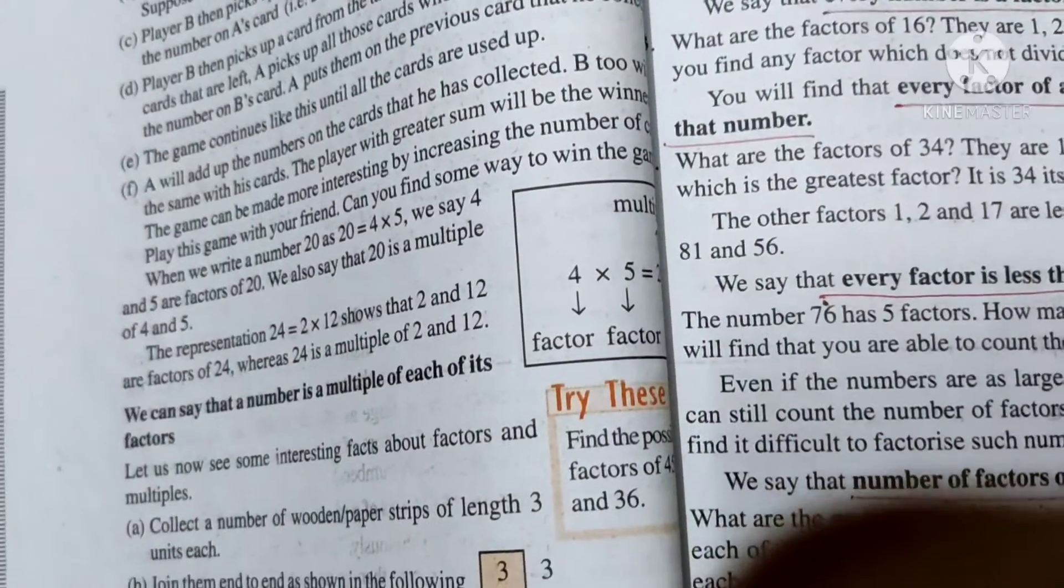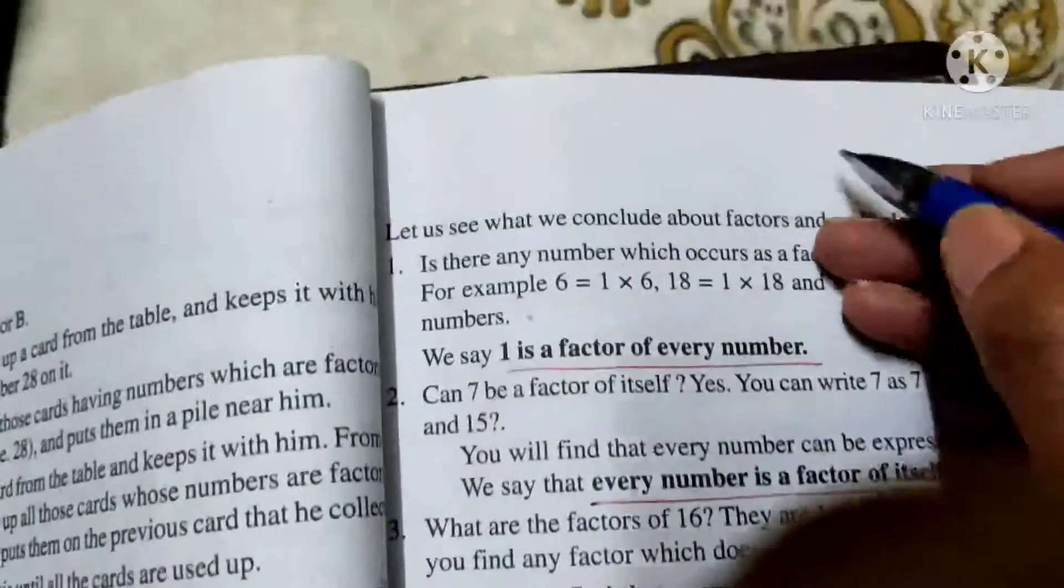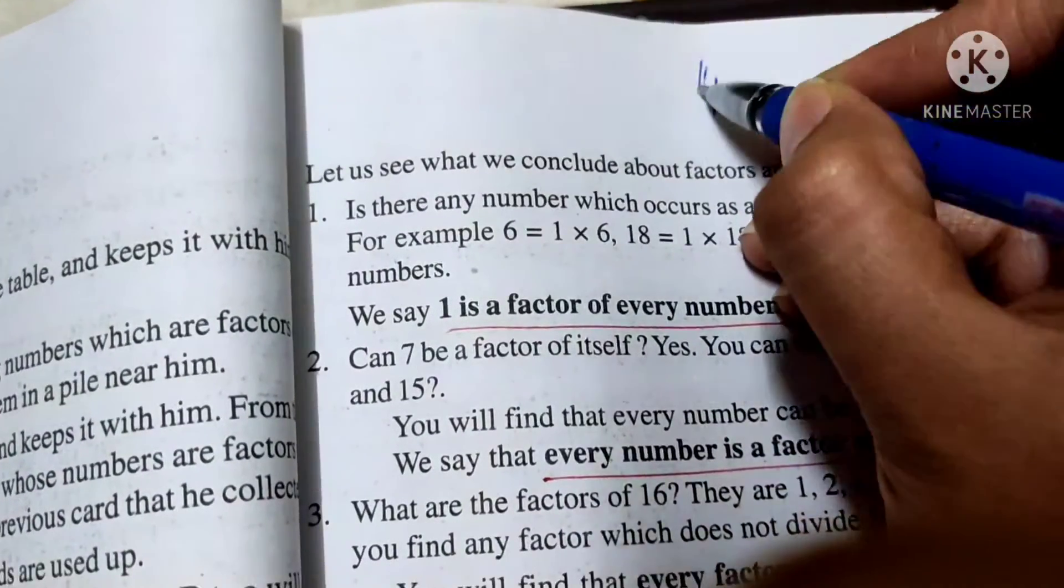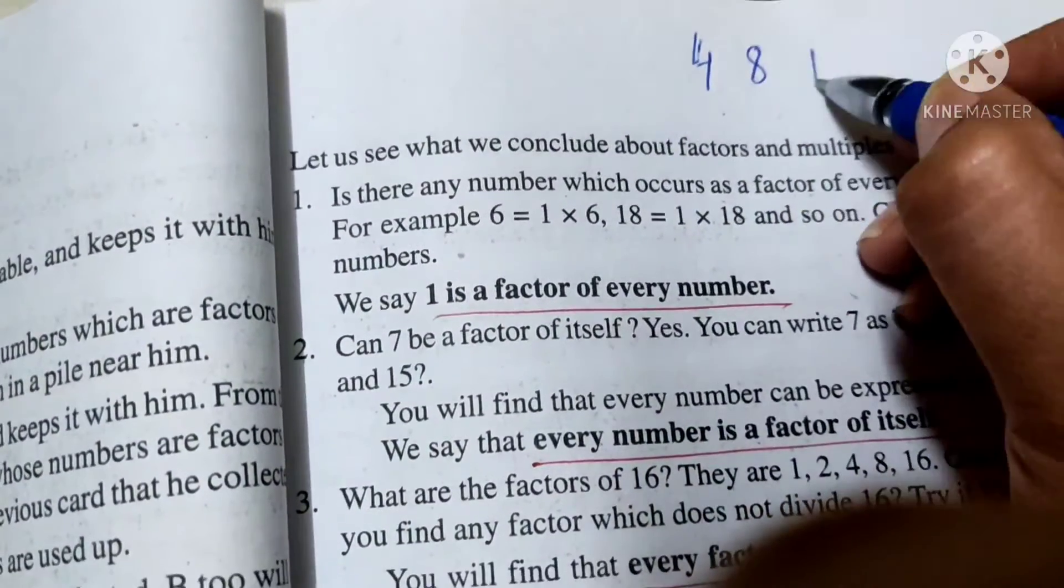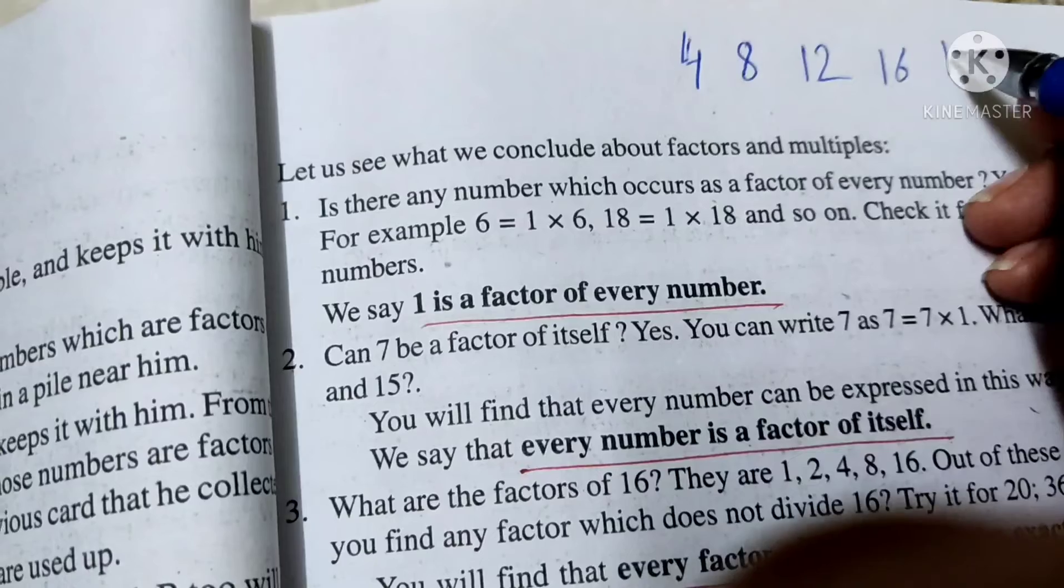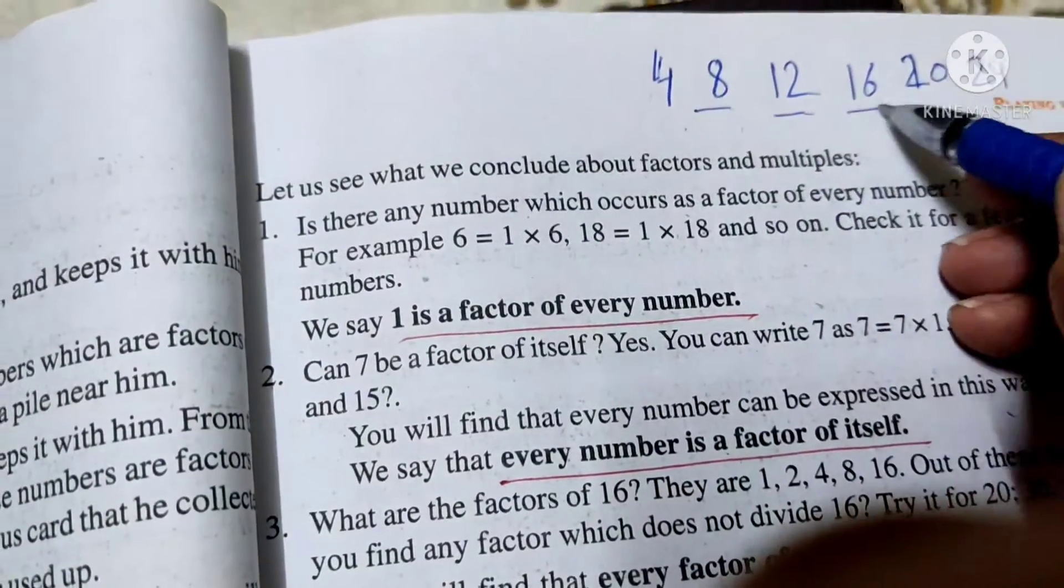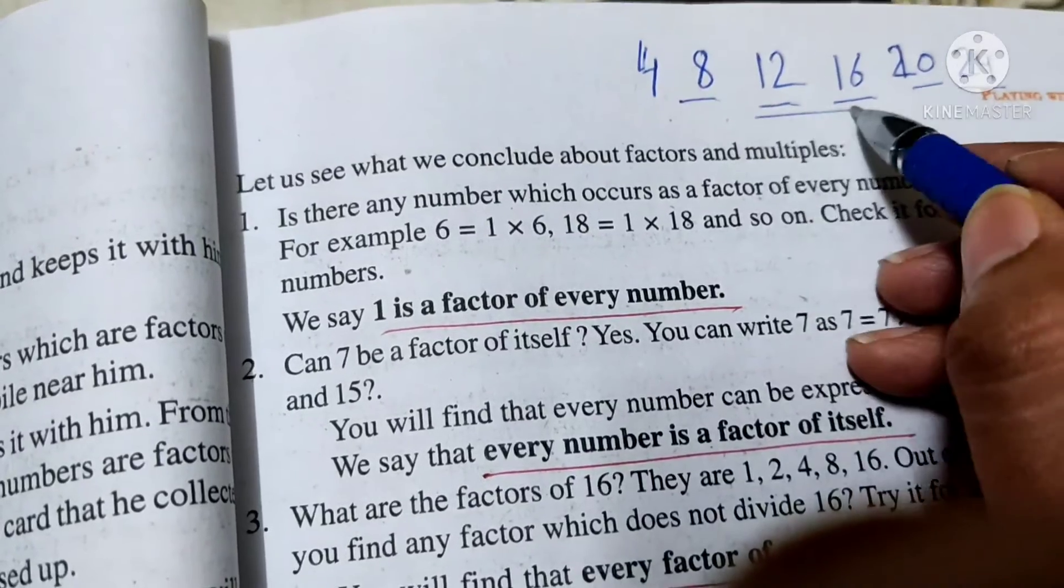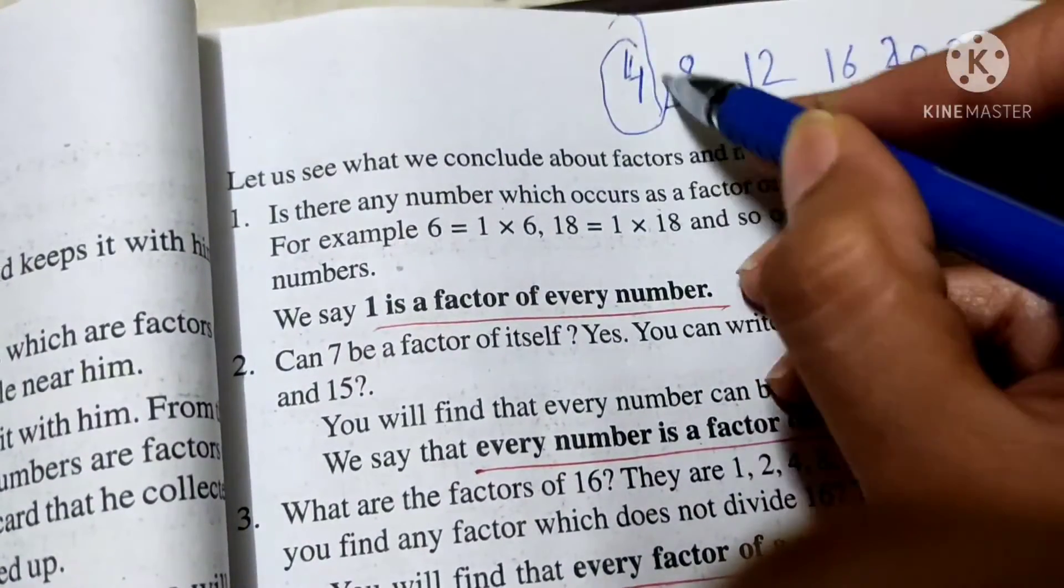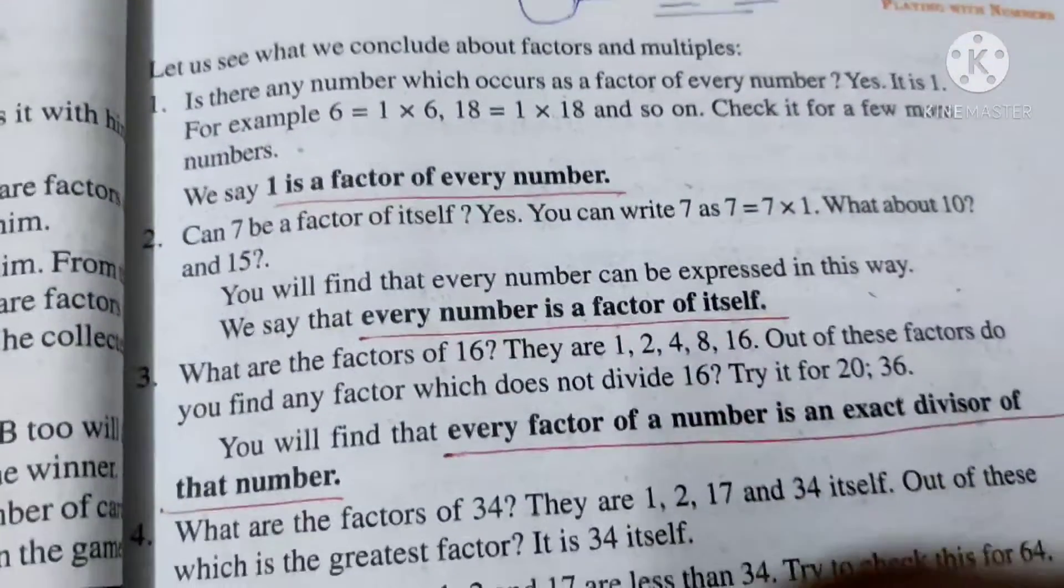Suppose I take the example, suppose I write 4. Then let's do its table - 4, 8, 12, 16, 20, 24. This way. So 8, 12, 16, 20, 24, these all are multiples of 4.